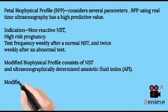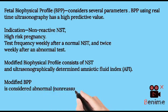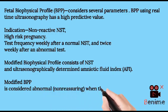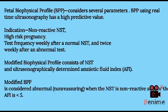The modified BPP is considered abnormal, or non-reassuring, when the NST is non-reactive and/or the AFI is less than 5.